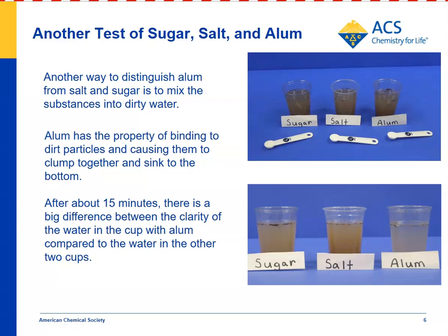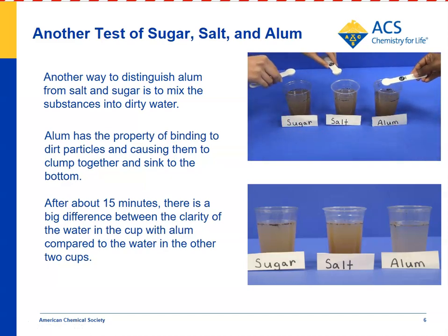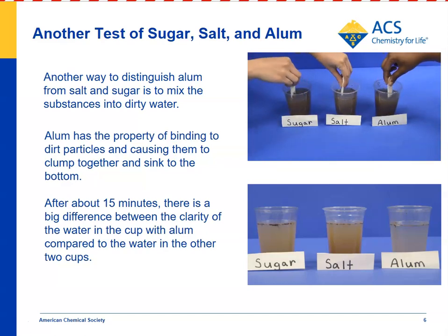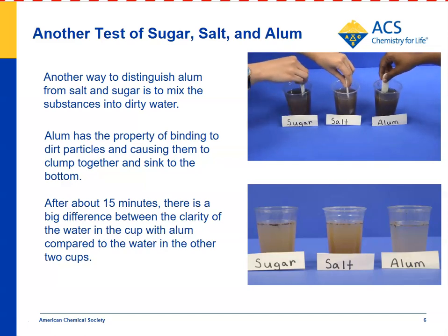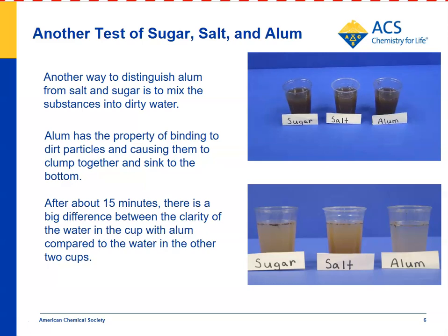There's another test to distinguish between sugar, salt, and alum: alum has a neat characteristic where it can clump particles together. With the same amount of dirty water in each cup, students add the same amount of sugar, salt, and alum, stir for about a minute, and after about 10 minutes the alum sample shows clumped dirt and much cleaner water compared to the salt and sugar samples.